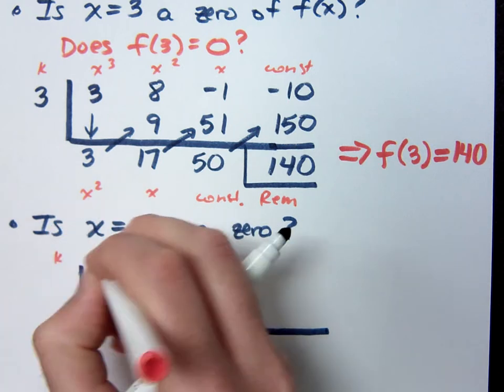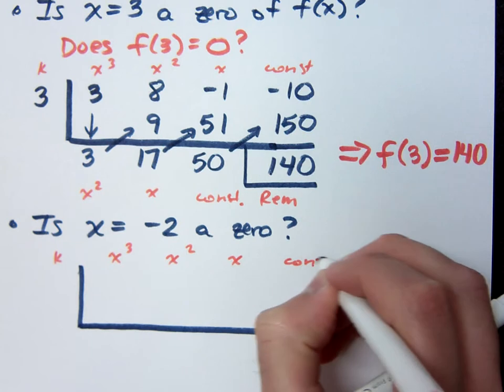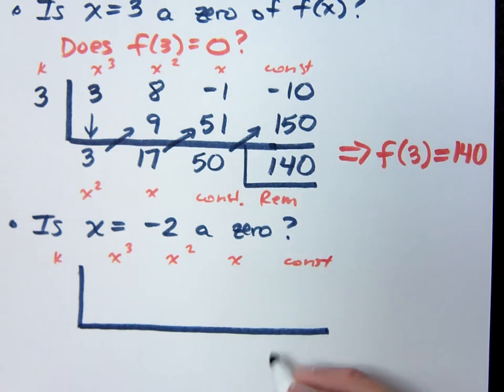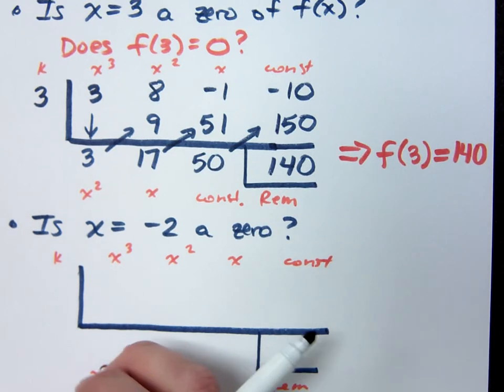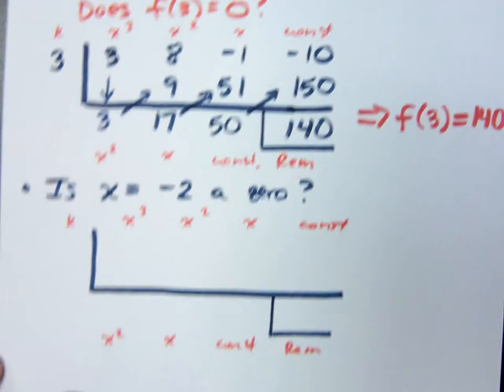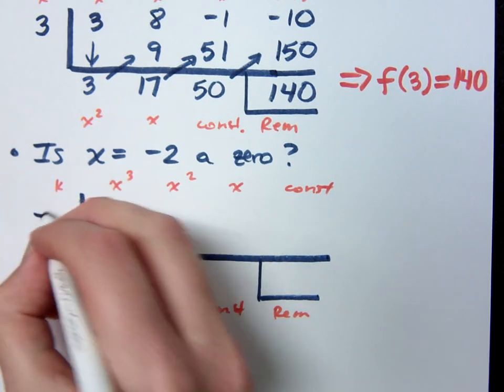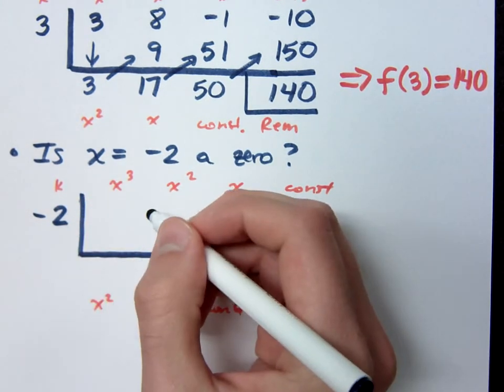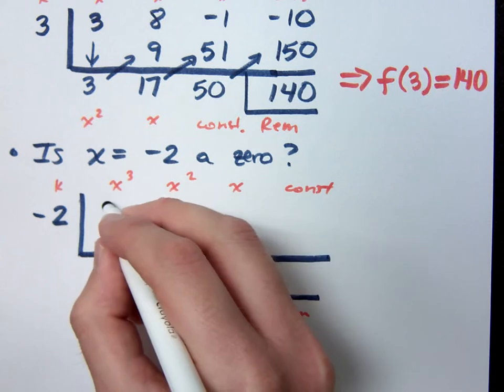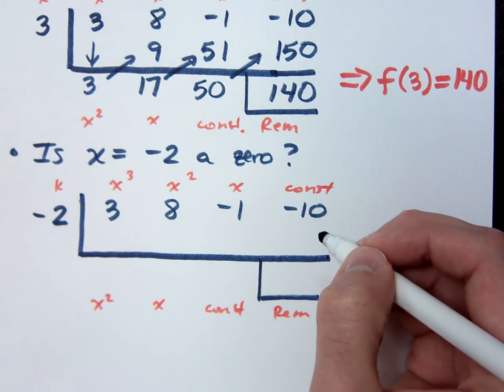So let's set up the synthetic division. I want to apply my k, x³, x², x, constant. This is your remainder. That's supposed to be your x², x, and your constant. Is everybody okay with my setup so far? I'm using my k value of -2. I'm still using the same coefficients because it's the same function. So that's 3, 8, -1, and -10.